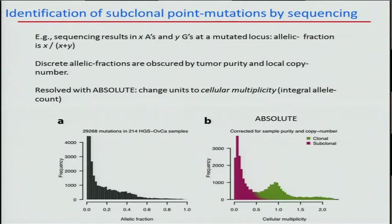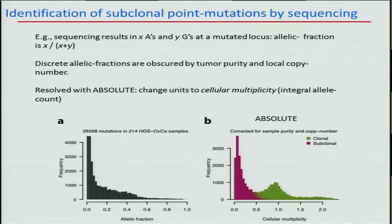Now I'm going to talk about rescaling estimates of allelic fraction into estimates of what we call multiplicity, which is an estimate of the number of mutant alleles per cancer cell. This is data from the TCGA ovarian cancer whole exome sequencing on Illumina. On the left, we combined all 30,000 mutations that we detected, and the allelic fraction distribution doesn't have a lot of structure — it's kind of a smear. That's because there are a lot of copy number alterations in this tumor type and very different purities, which totally obscure these allelic fractions.